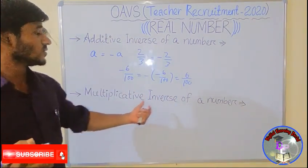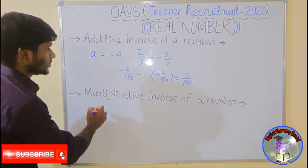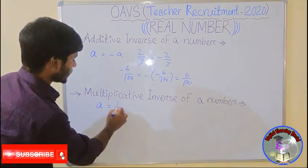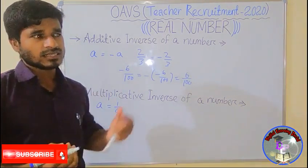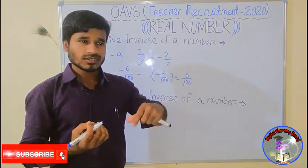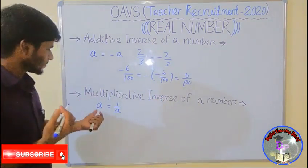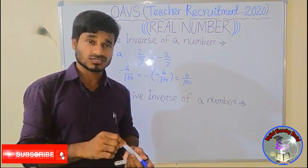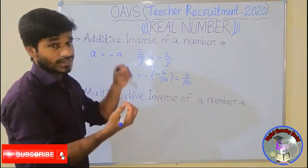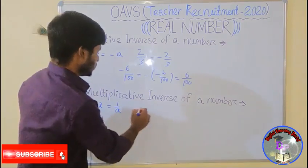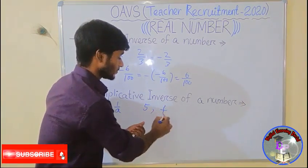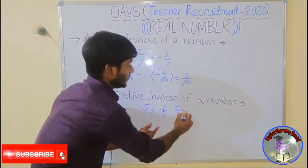Then we have to discuss the multiplicative inverse of a number. Suppose we take a number a; its multiplicative inverse is 1 by a. That means we have to change p by q into q by p — the numerator by denominator changes into denominator by numerator. Whenever we find the product of a number and its multiplicative inverse, the result is 1. For example, the multiplicative inverse of 5 is 1 by 5, and 5 into 1 by 5 equals 1.